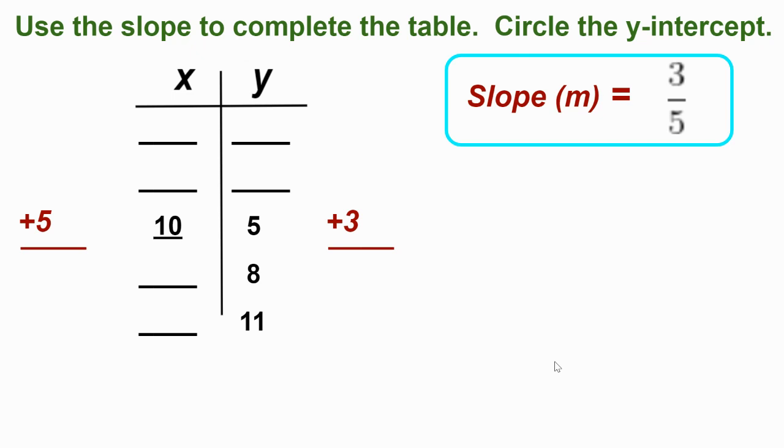Remember, if we're increasing as we work down the table, well, we're decreasing as we work up the table. So now as I work backwards, I'm going to do the opposite of adding. I'm going to subtract 3. Let's do it. 5 minus 3, that's 2, and 2 minus 3, that's negative 1.